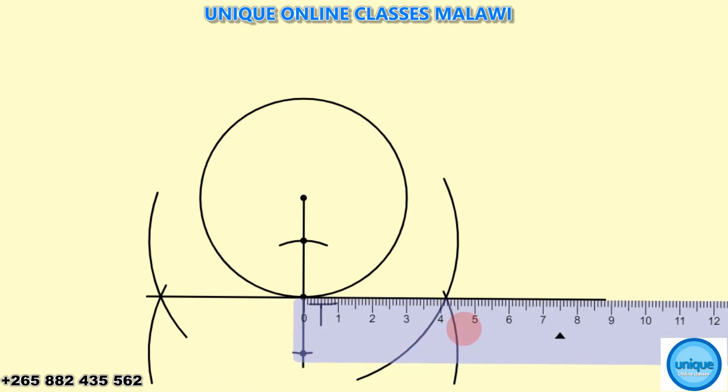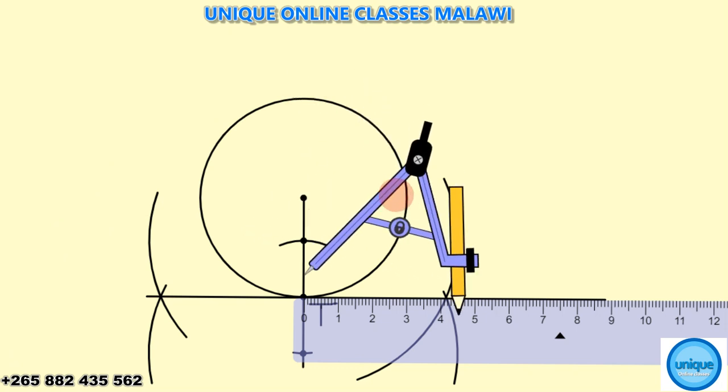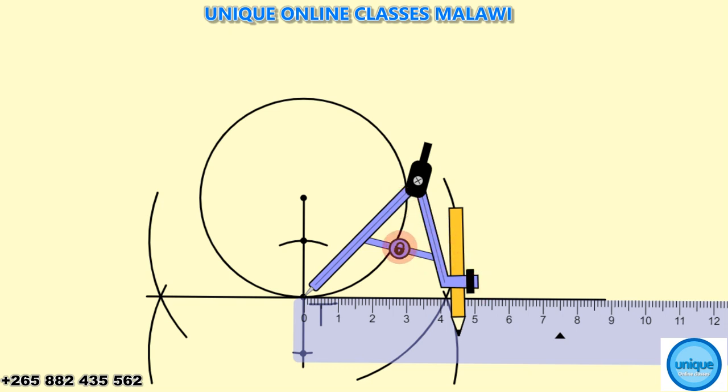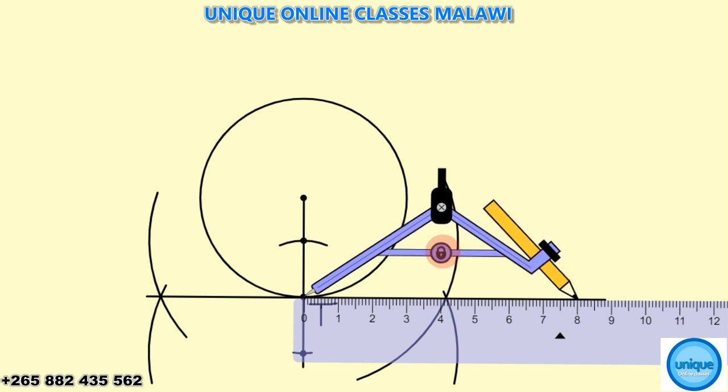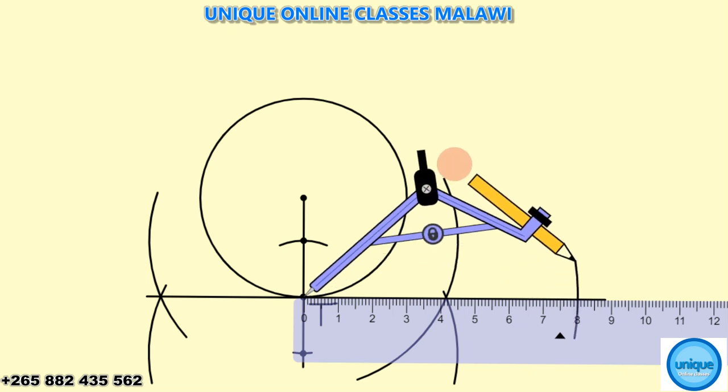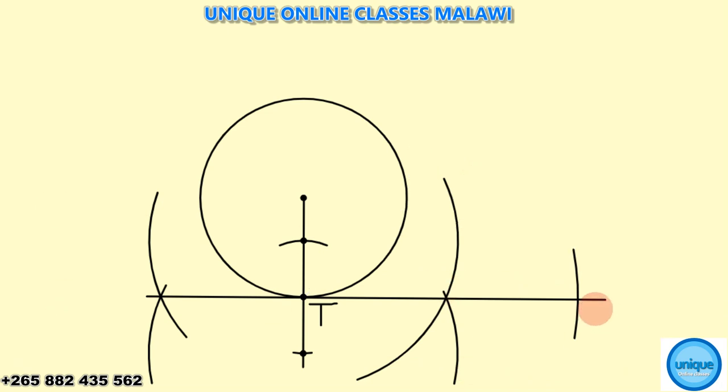So this is my ruler, equal to 8 centimeters. I'm going to bring my pair of compass which I'm going to use to make an arc of 8 centimeters from tangent P. That's my 8 centimeters. Now that point is P.